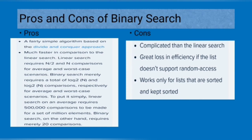The advantages of binary search: it's a fairly simple algorithm based on the divide and conquer approach, much faster in comparison to linear search. Linear search requires n by 2 and n comparisons for average and worst case scenarios. Binary search merely requires a lot of log base 2 of n comparisons respectively for average and worst case scenarios. To put it in simplicity, linear search on average requires 500,000 comparisons to be made for a set of million elements. Binary search on the other hand requires nearly 20 comparisons.